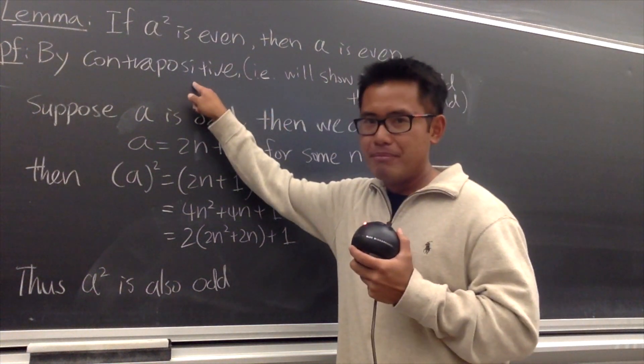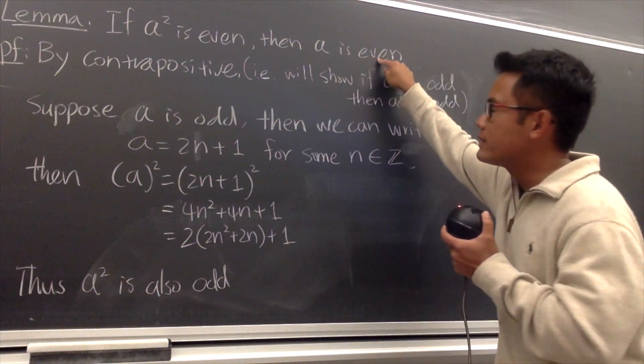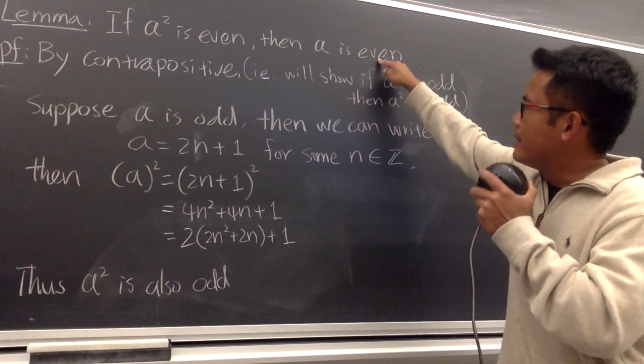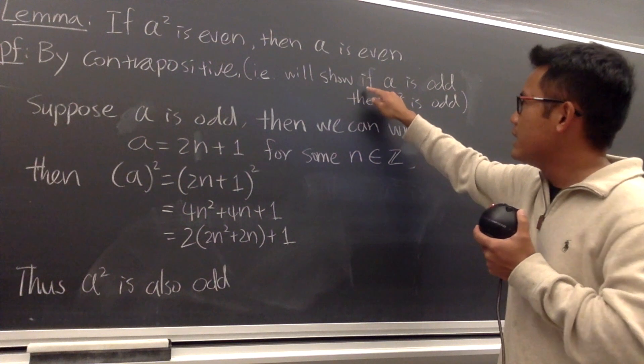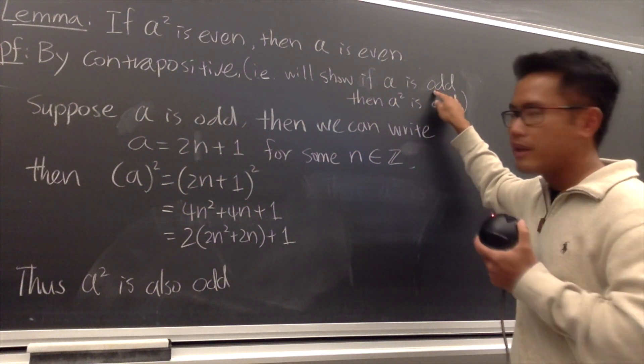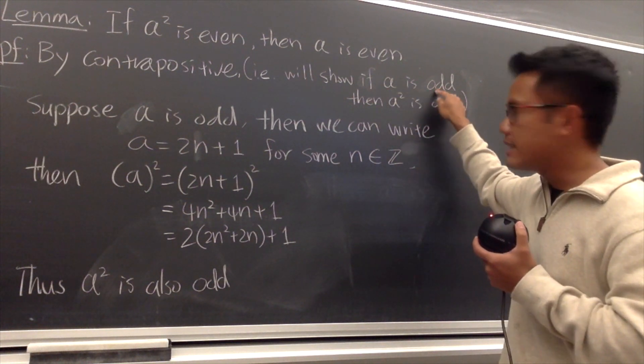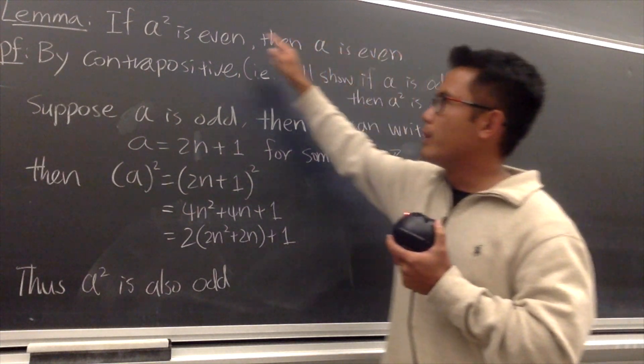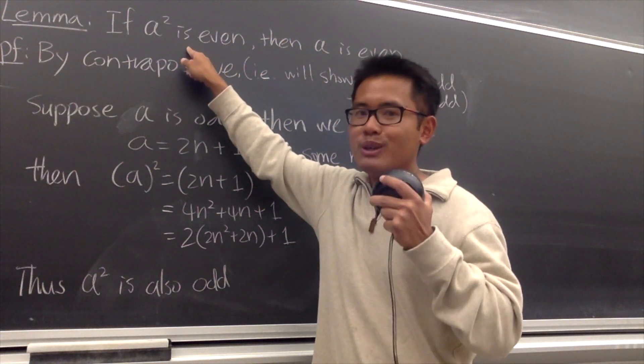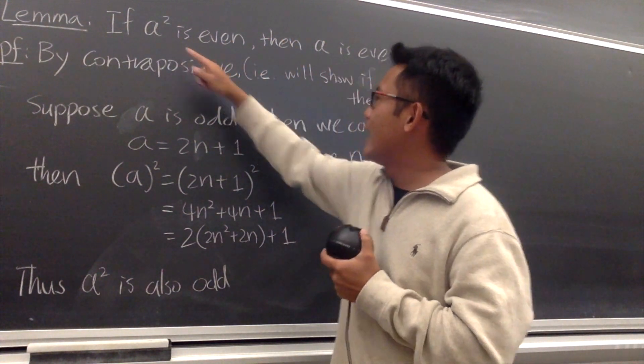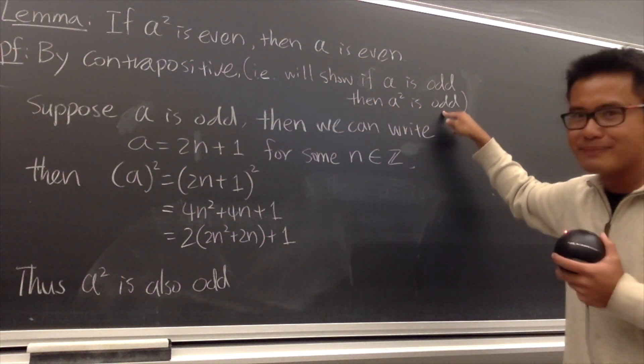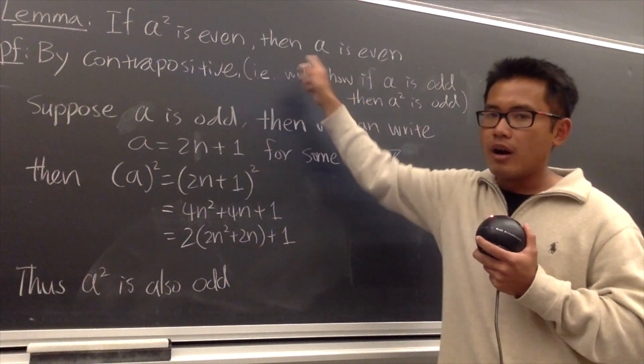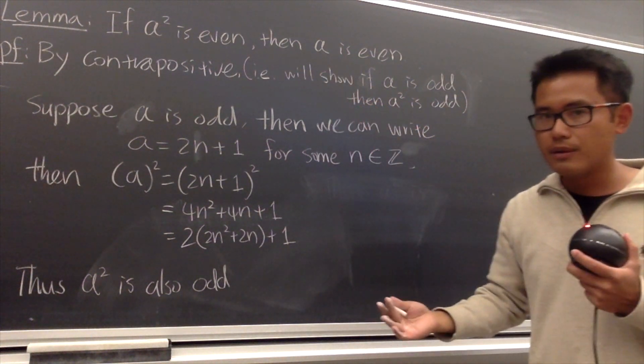This means that we will first assume the opposite of the condition, meaning we'll show that if a is not even, meaning if a is odd, then we will negate the original conclusion, meaning we will conclude that a squared is not even, which is also odd. So this and that are equivalent statements.